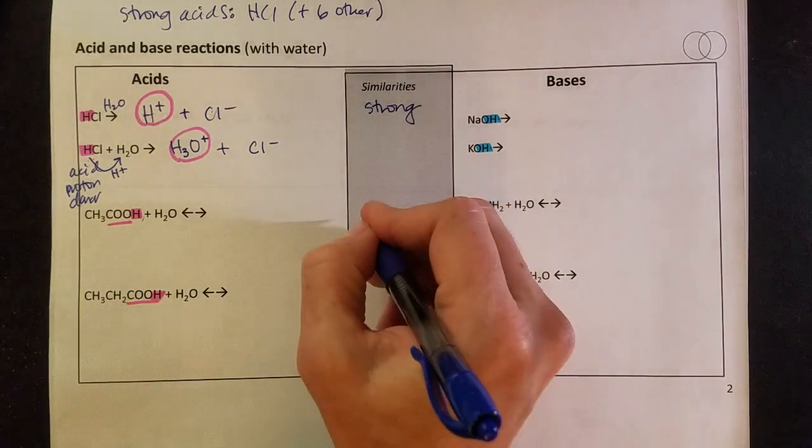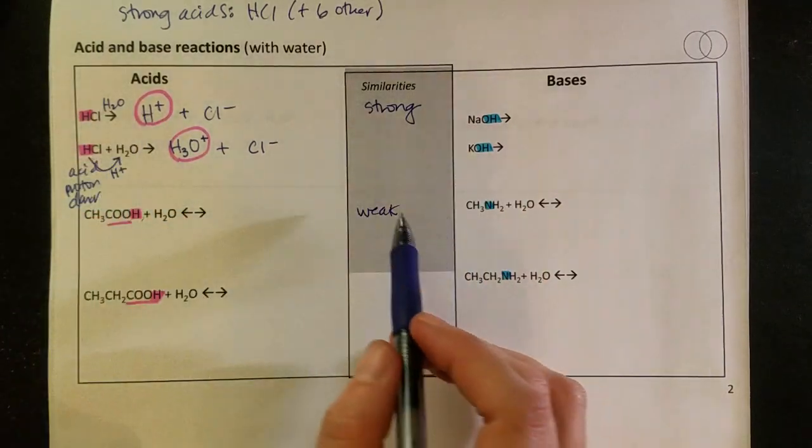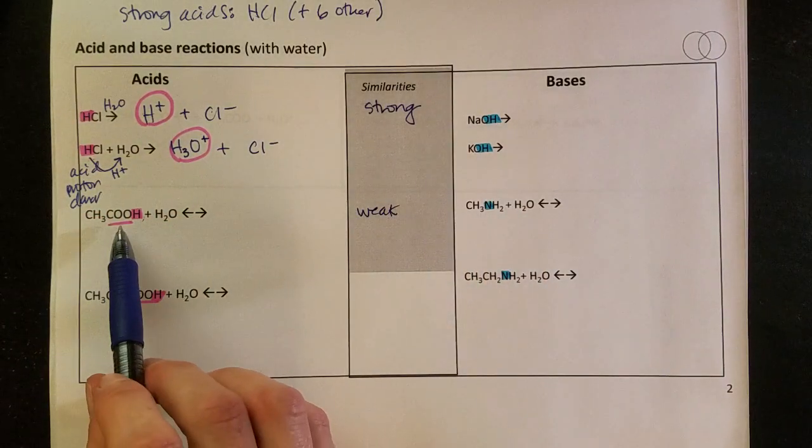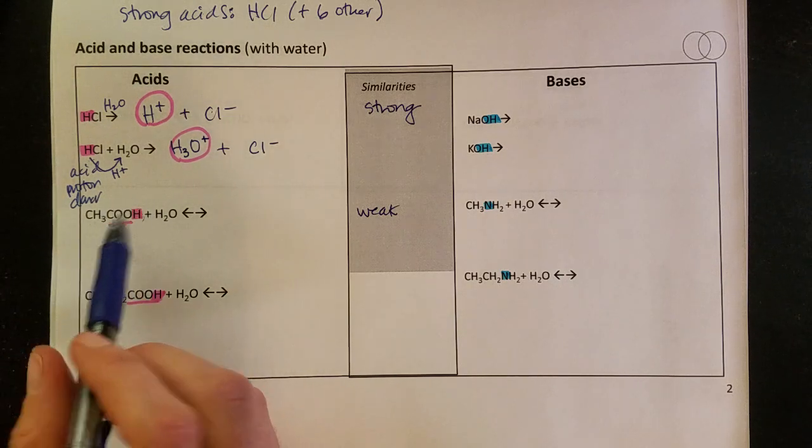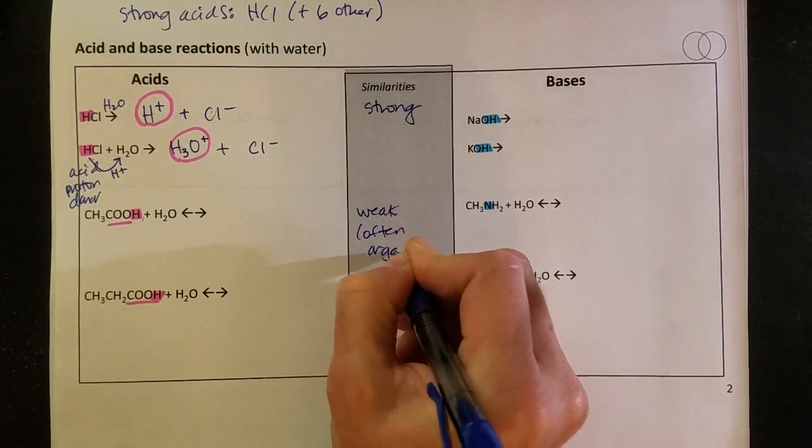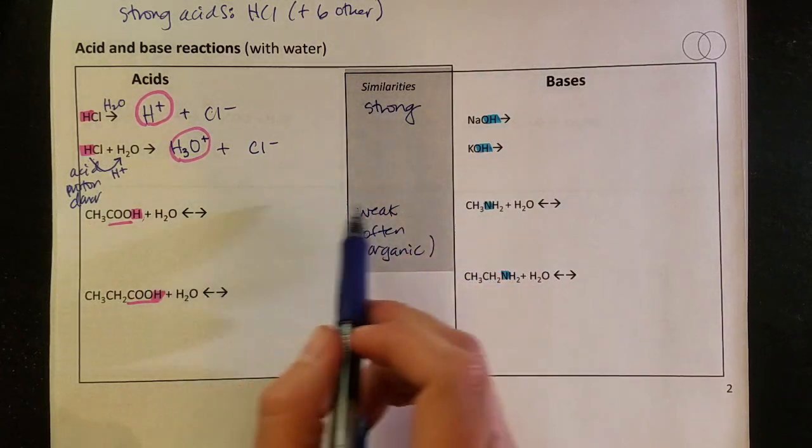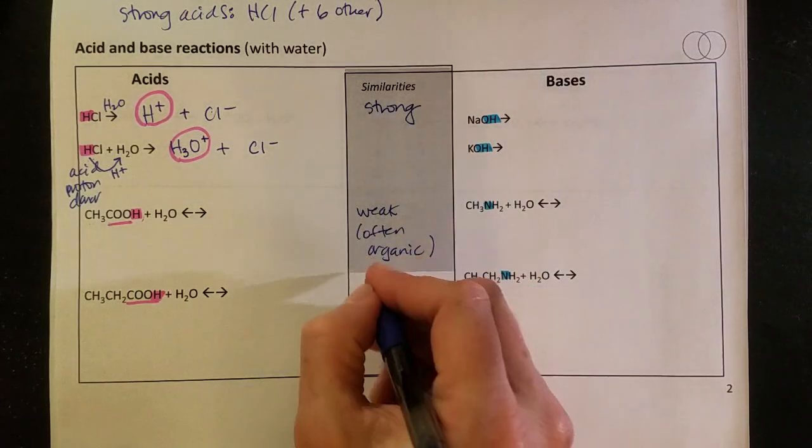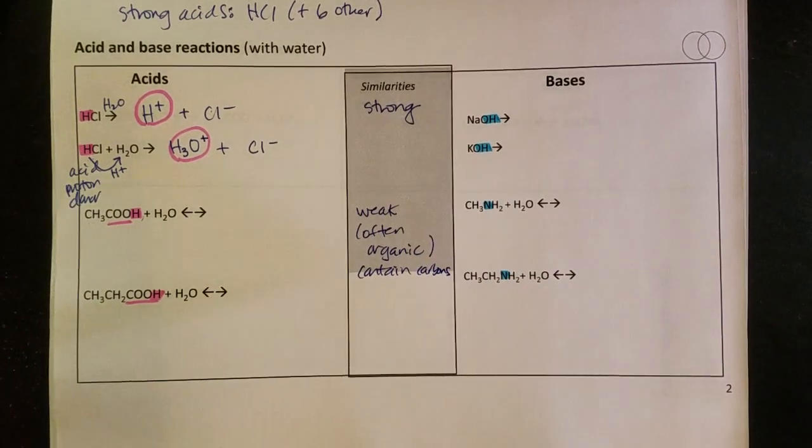Now this is vinegar, and this is obviously not as dangerous as hydrochloric acid, so this is what we call a weak acid. And you will notice that this contains some carbons in it, so I would say that this is an organic acid. And we can see over here on the base side there's some carbons too, so our weak acids and weak bases often are organic or contain carbons in their structure.